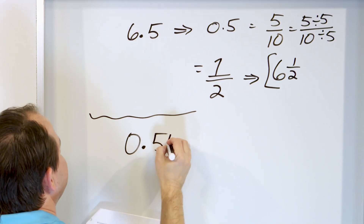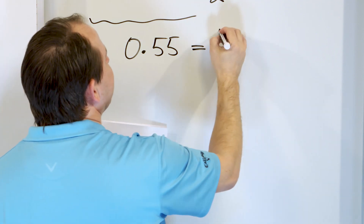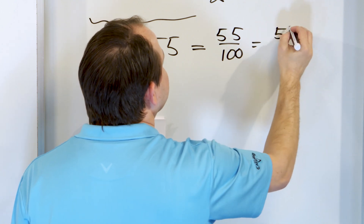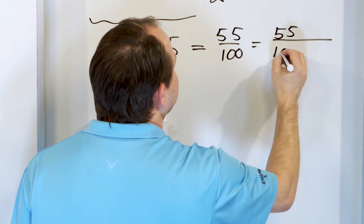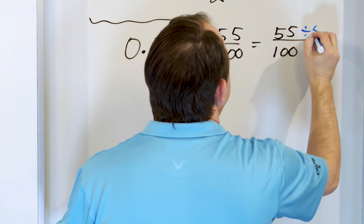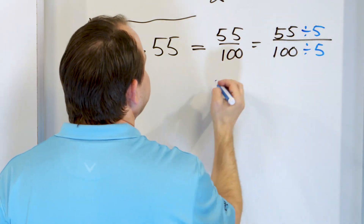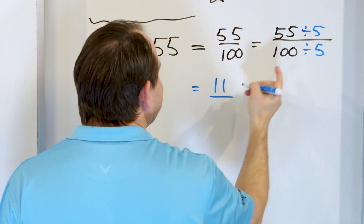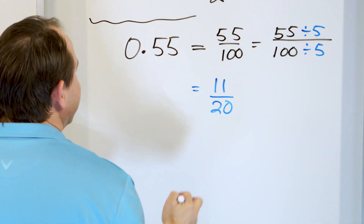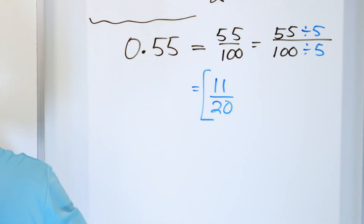Only two more problems: 0.55. We have 55 in the farthest position, which is hundredths — 55 over 100. We can simplify by dividing both by 5, since both are divisible by 5. 55 divided by 5 is 11, and 100 divided by 5 is 20. So the answer is 11 twentieths — that's the fractional equivalent.